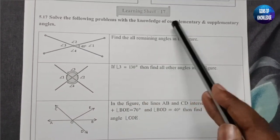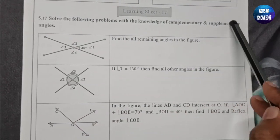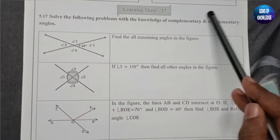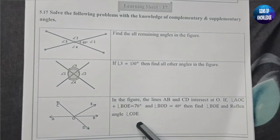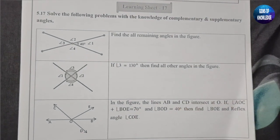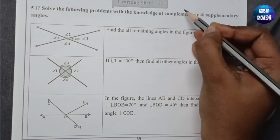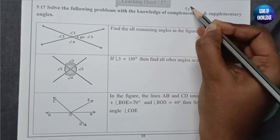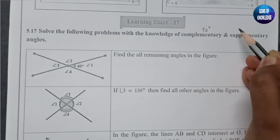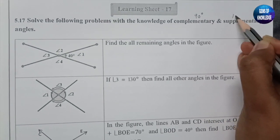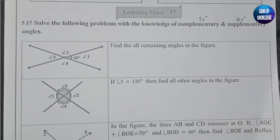Using the complementary and supplementary angles idea, we need to solve this learning sheet. We know that for complementary angles, the sum of two angles must be equal to 90 degrees. For supplementary angles, the sum of both angles must be equal to 180 degrees.